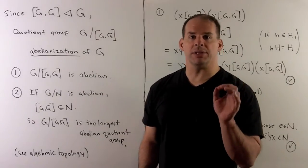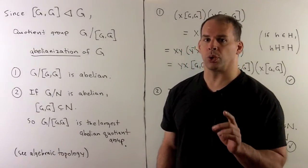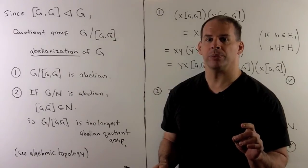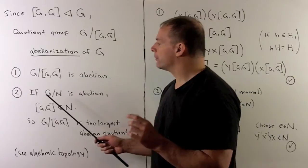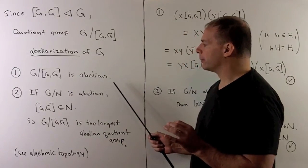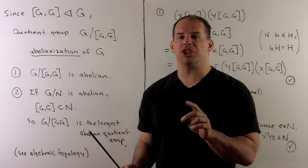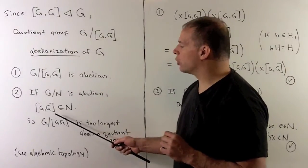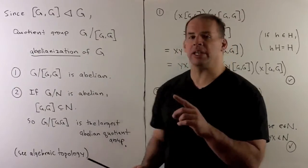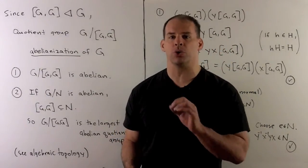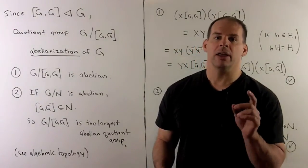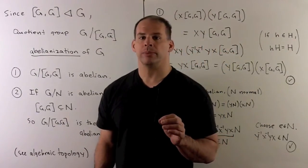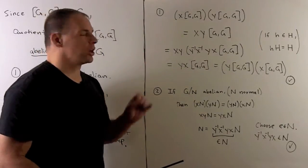Because the commutator subgroup is normal, we can form the quotient group. This quotient group gets a special name: the abelianization of G. It gets its name for two reasons. First, this quotient group is abelian. Second, if we take any other quotient group G mod N with N normal, and if that's abelian, then the commutator subgroup must be a subgroup of N. So the abelianization is the largest abelian quotient group for G. As an application, this turns up in algebraic topology when we study the fundamental group.